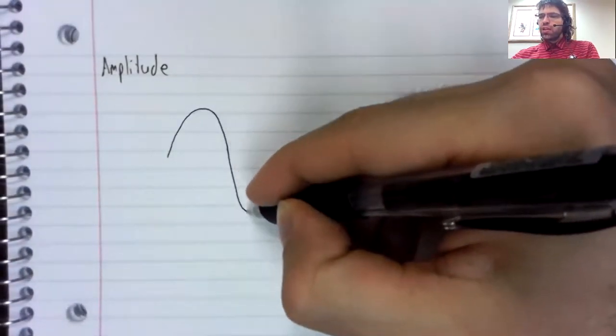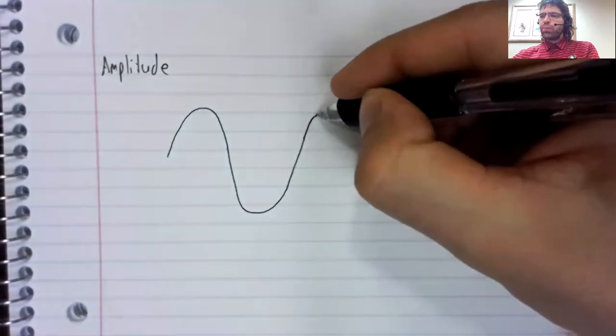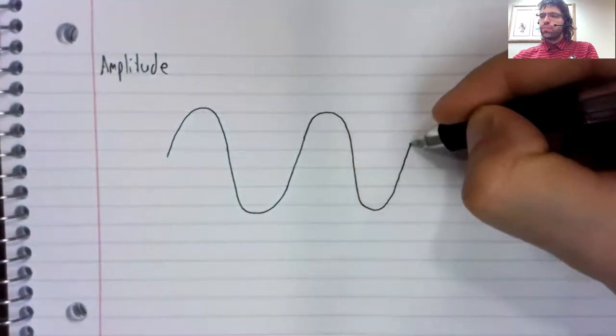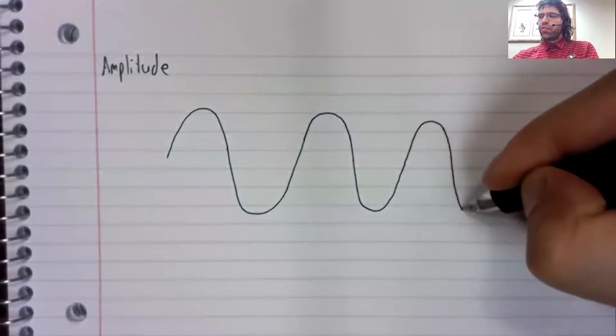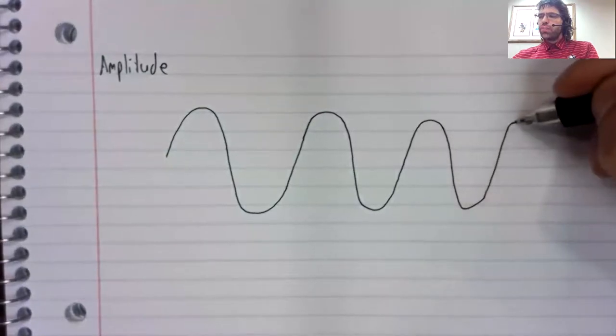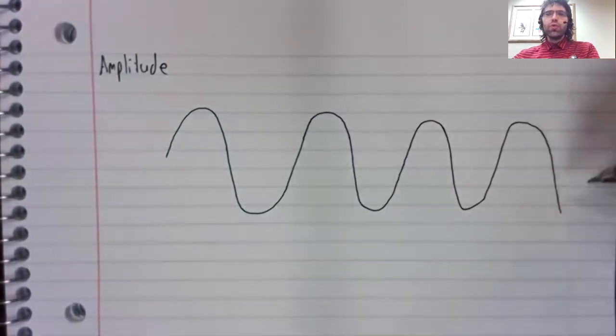And that's because to have an amplitude, the graph of the function has to be waves.